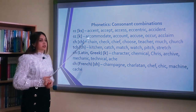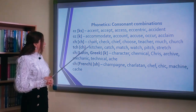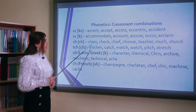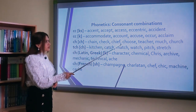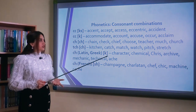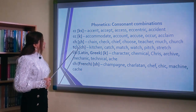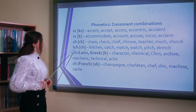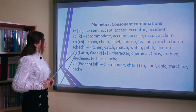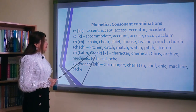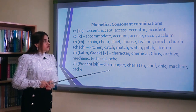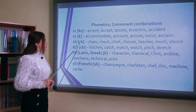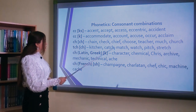The letter combination ch can be pronounced as /tʃ/: chain, chuck, chief, choose, teacher, match, church. Ch hərf birləşməsi /tʃ/ (ç) səsi verir. The combination tch can also be pronounced as /tʃ/: kitchen, catch, match, watch, peach, stretch. Tch hərf birləşməsi də həmçinin /tʃ/ (ç) səsini verir.